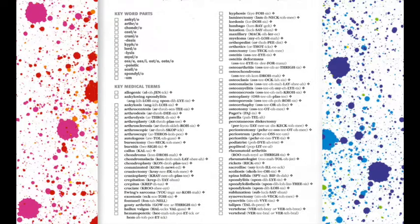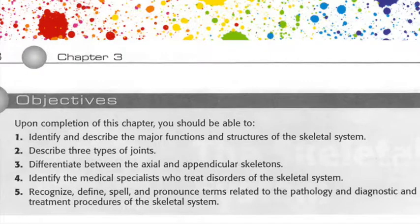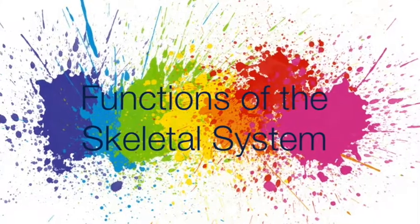Next, we have your keyword parts and key medical terms. This is a great place to study, focus, and create some flashcards. Objectives for chapter 3 include identifying and describing the major functions and structures of the skeletal system, describing three types of joints, differentiating between the axial and appendicular skeletons, identifying the medical specialists who treat disorders of the skeletal system, and recognizing, defining, spelling, and pronouncing terms related to the pathology and diagnostic and treatment procedures of the skeletal system.